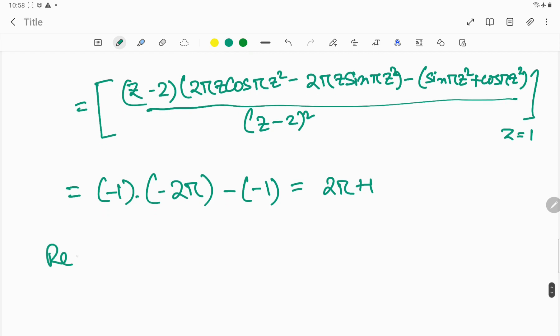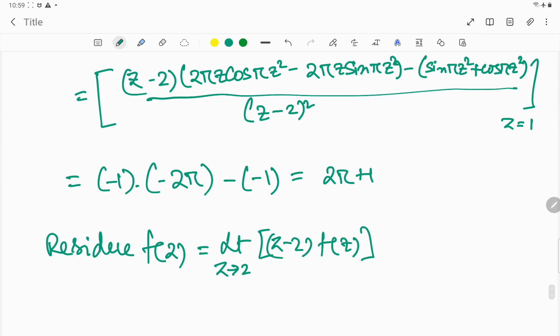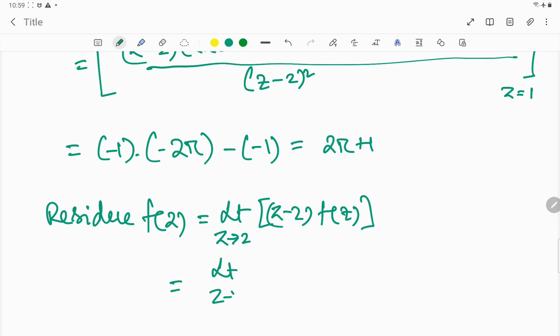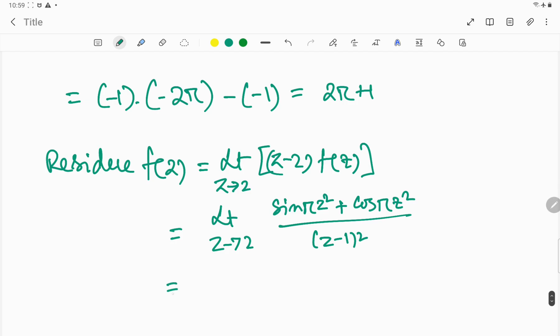Now residue at z equal to 2. This is a pole of order 1, so we can do this like: limit as z tends to 2 of [sin(πz²) + cos(πz²)]/(z-1)². This will be 1.